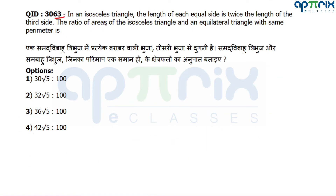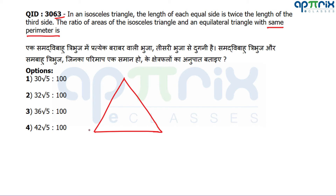Question number 63: In an isosceles triangle, the length of each equal side is twice the length of the third side. The ratio of the areas of this isosceles triangle and an equilateral triangle with the same perimeter is required. I assume the third side = 2, so the equal sides = 4 each. Drawing the triangle, the altitude bisects the base, giving two halves of 1 each. The altitude = √(16 − 1) = √15.